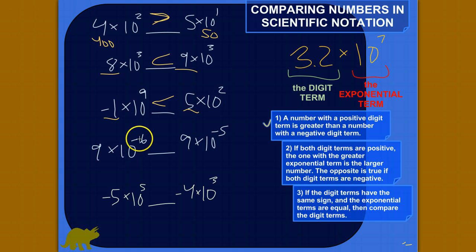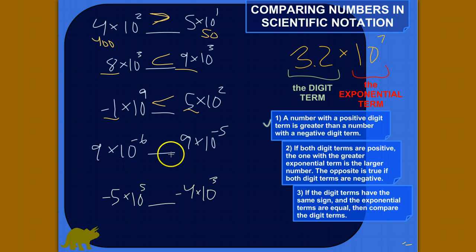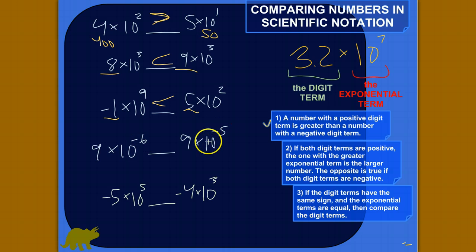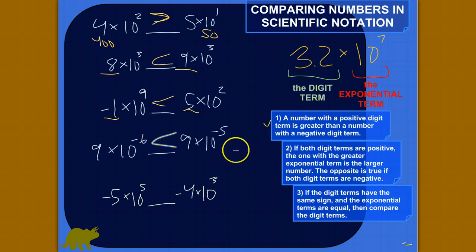Now look at 9 times 10 to the negative second versus 9 times 10 to the negative sixth. Both digit terms are positive, so rule one doesn't apply. Rule two: if both digit terms are positive, the one with the greater exponential term is larger. Comparing the exponents: ten to the negative fifth is greater than ten to the negative sixth. Therefore, 9 times 10 to the negative fifth is greater than 9 times 10 to the negative sixth.